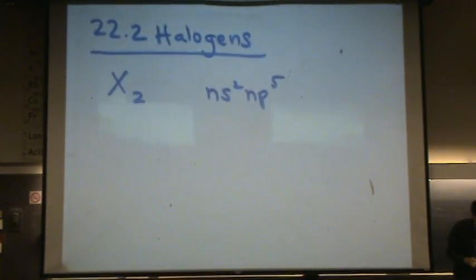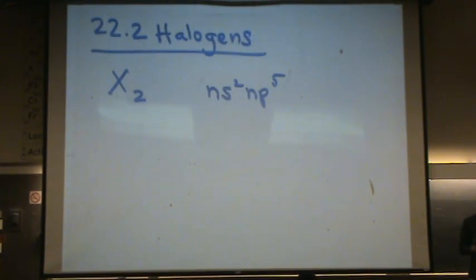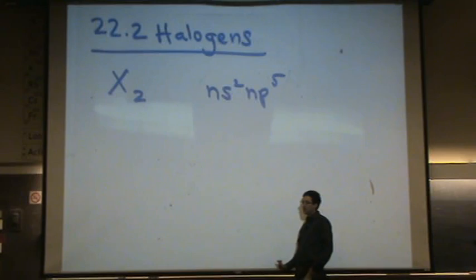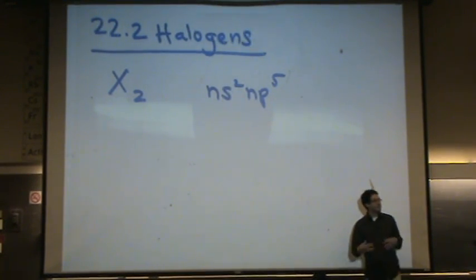Which would be the most reactive halogen? Fluorine. F-minus is the most reactive, I-minus would be the least reactive. The reason is polarizability. Polarizability has to do with size.